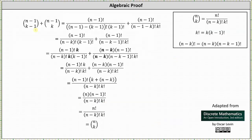Now let's set up the proof. We begin by applying the factorial definition for n minus 1 choose k minus 1 and n minus 1 choose k. n minus 1 choose k minus 1 is equal to n minus 1 factorial divided by the product of the quantity n minus 1 minus the quantity k minus 1 factorial and k minus 1 factorial. n minus 1 choose k is equal to n minus 1 factorial divided by the product of the quantity n minus 1 minus k factorial and k factorial.